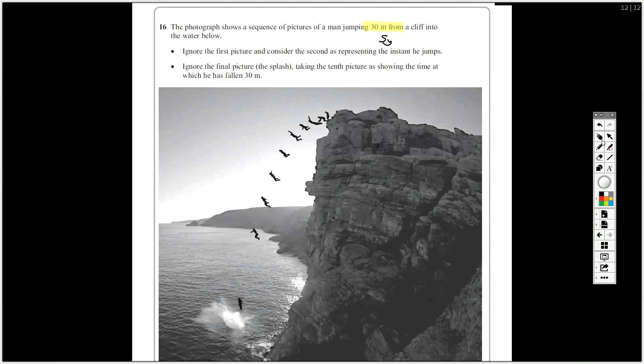Ignore the first picture and consider the second as representing the instant he jumps, and ignore the final picture, and of course the splash, don't try and measure the splash. Taking the tenth picture is showing a time which is 4 and 30 metres. Okay, so if we're ignoring the first picture, this is 0 here.